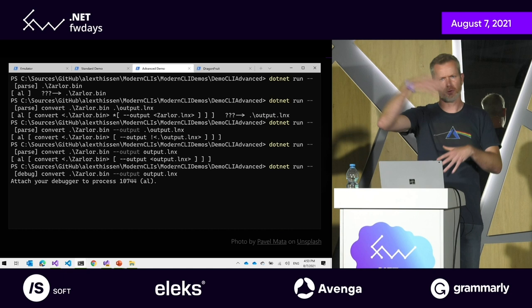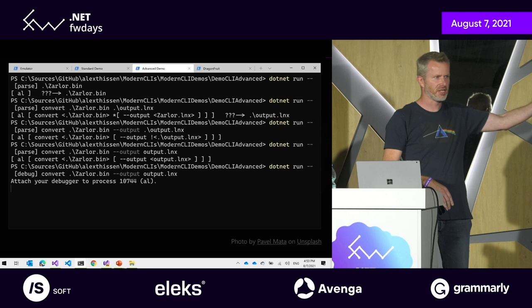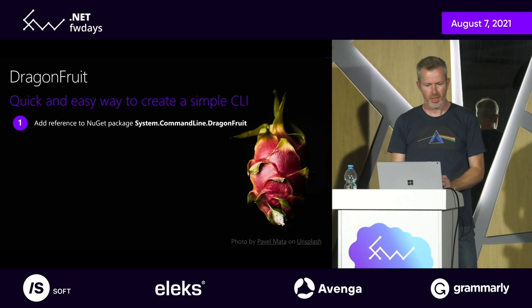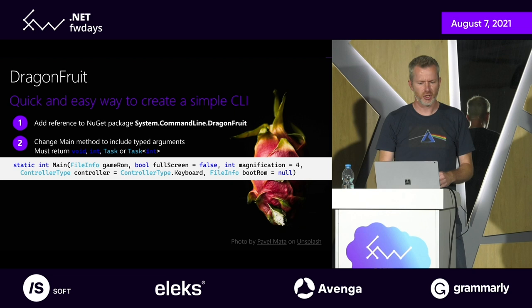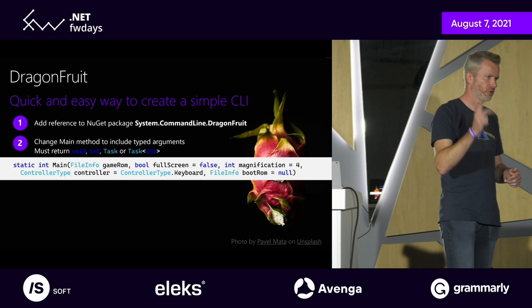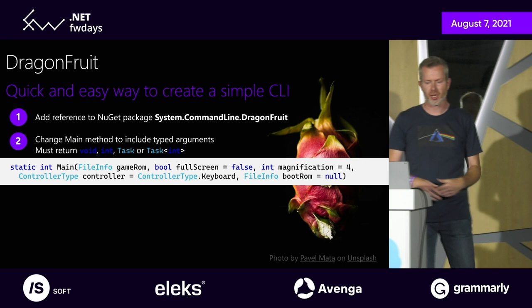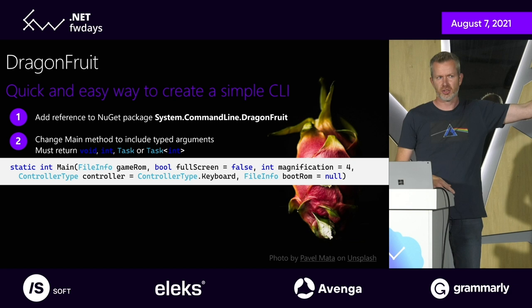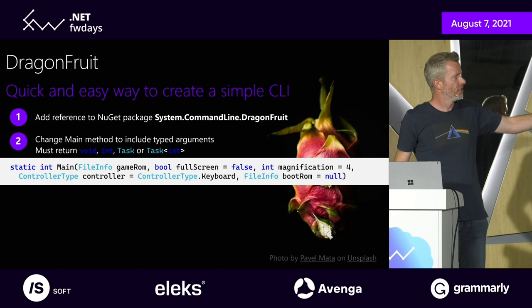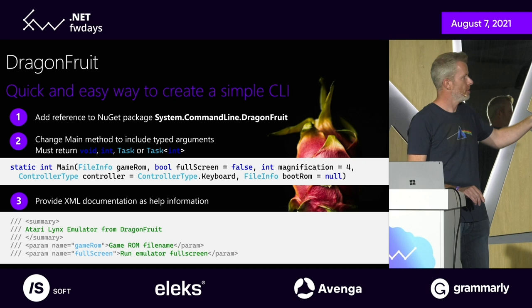Dragon Fruit is a way to create a very fast command line interface without the hassle of all that setup. For a simple single-command thing with arguments, options, and defaults, you include the NuGet package System.CommandLine.DragonFruit, remove your static void or static int main with no arguments or string array arguments, and specify what we specified in our run method. Compiler magic changes this into a command with options and arguments — well, only options. If you provide XML documentation, that turns into the help text for your application.